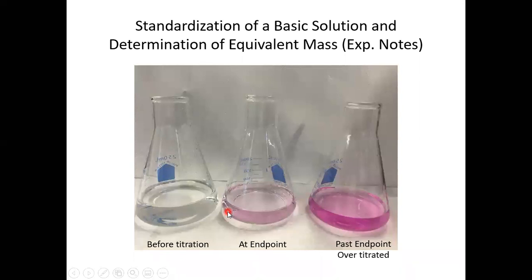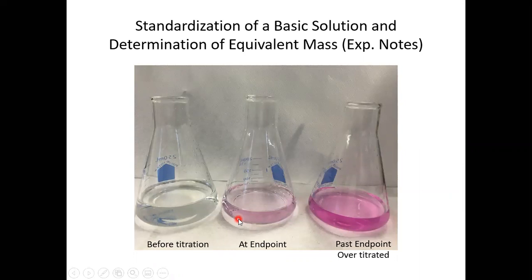This is what your titration would look like over time. Before the titration your solution would have no color. As you reach the endpoint you'd start to see the pink color persist longer and longer. Your endpoint is the first drop that turns the solution from clear to a persistent pink — it has to be a one-drop situation. If you need more than one drop to make that color change, you've gone past the endpoint and over-titrated, and you would need to back titrate to fix it.